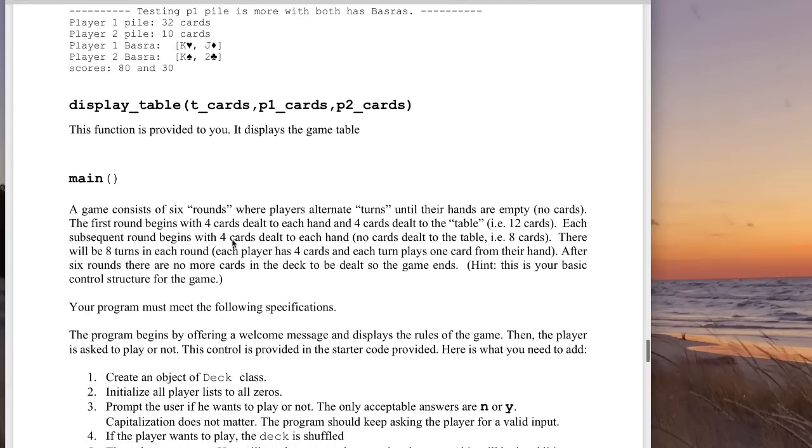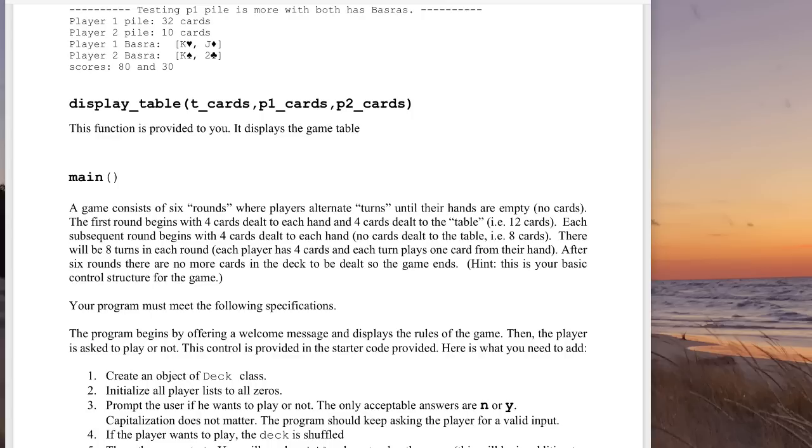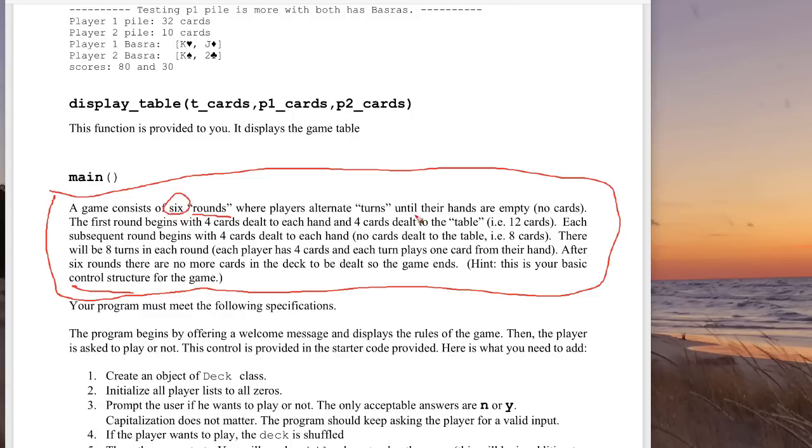So a couple of things that I do want to emphasize is that when you get down to the main, which is the whole driver of this thing, we broke the game down here into describing it in a way that will help you develop the basic control structure in the main part. So a game will have six rounds. And the players will alternate turns in that until their hands are empty. So the first round begins with four cards dealt to each hand and then four to the table. That is we just used up 12 cards and each subsequent round begins with four cards dealt to each hand, no cards dealt to the table.